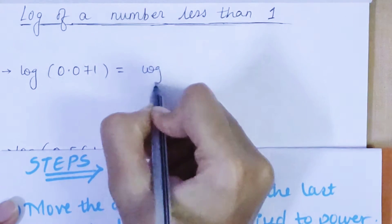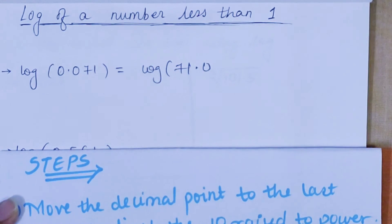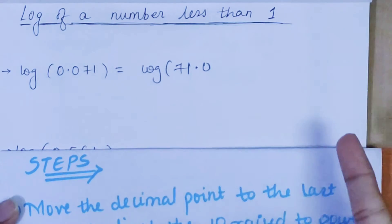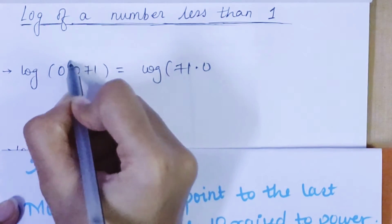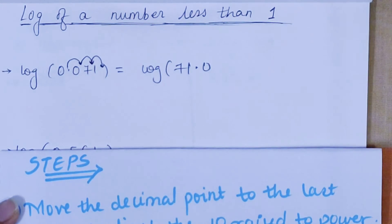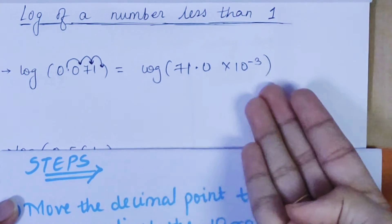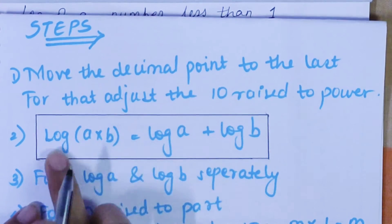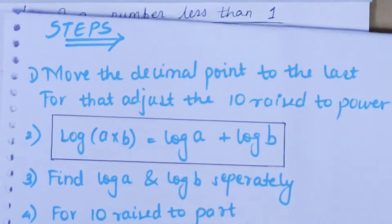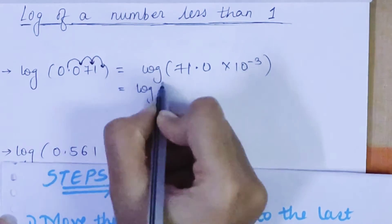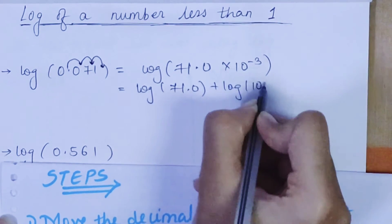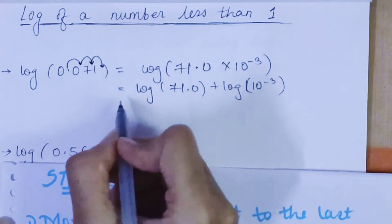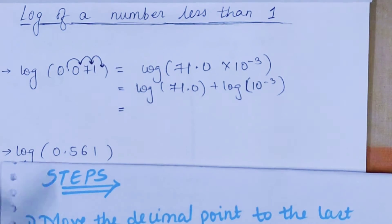So log(0.071) becomes log(71.0). Now I also need to adjust the 10 raised to power. How many steps have I gone forward? One, two, three — I've gone three steps ahead. So I multiply by 10^(−3). This gives me log(71.0 × 10^(−3)), which is my log(a × b). Applying step 2: this becomes log(71.0) + log(10^(−3)).